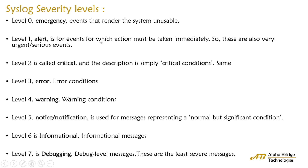Level 7 is the least severe messages and Level 0 is the highest severity. This means high priority is given to level 0 and low priority to level 7. We can select which type of messages we want to receive from the devices to the server. If we get all types of messages, it will be difficult to store and complex during troubleshooting. So we can select which level we want. If you select level 0, you will get only emergency messages. Or if you select level 3 error conditions, you will get messages from levels 0 to 3, and all those messages will be stored in the syslog server.